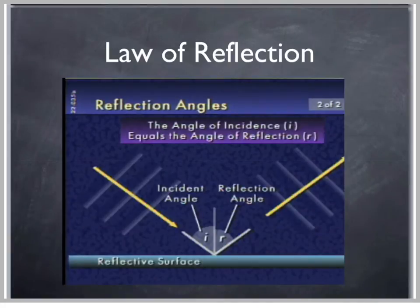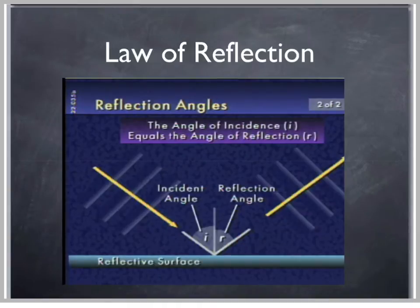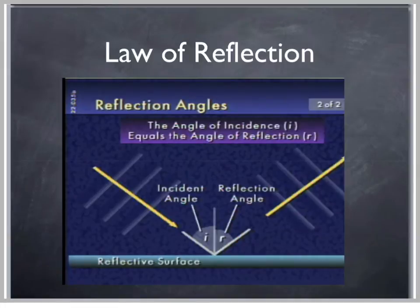Let's first talk about reflection. In the ripple tank, we had a boundary — a big yellow plastic thing — and water waves made by the ripple maker came in, hit the boundary, and reflected off. We represented the incoming water waves with a line called a ray, and the reflected waves with another ray. So we would say that's the incident ray and that's the reflected ray. Then we drew in a reference line called the normal, because it's perpendicular to the barrier.